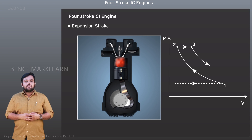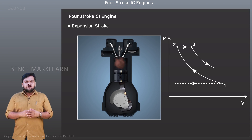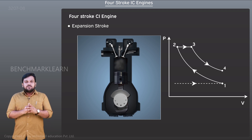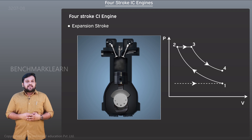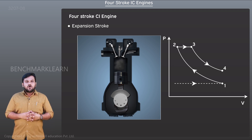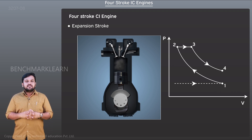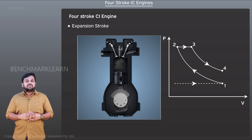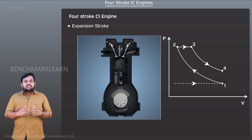The expansion of combustion products is represented by process three to four in the PV diagram. The piston moves from the top dead center to the bottom dead center, delivering power to the crankshaft.